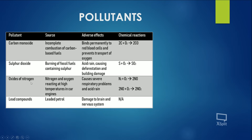Oxides of nitrogen are formed when nitrogen and oxygen react at very high temperatures, which occurs inside car engines. It's not the combustion itself but the high temperatures that cause the nitrogen and oxygen in the air to react with each other. Oxides of nitrogen can cause severe respiratory problems and also contribute to acid rain.